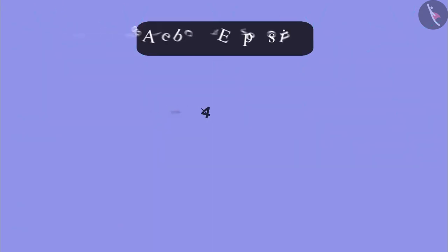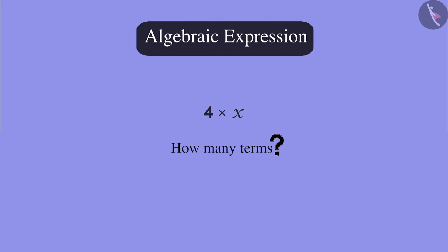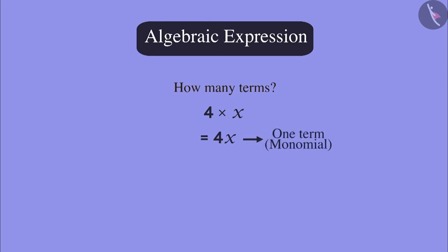Look at this expression. How many terms are there in this expression? Perhaps you may think that there are two terms here, but this expression has only one term which is 4x. Here, 4 is multiplied by x.